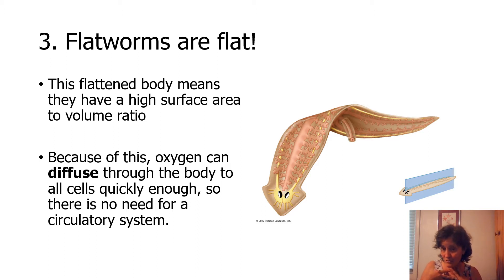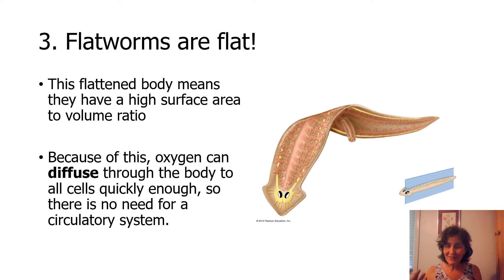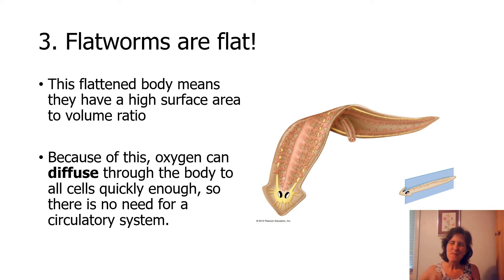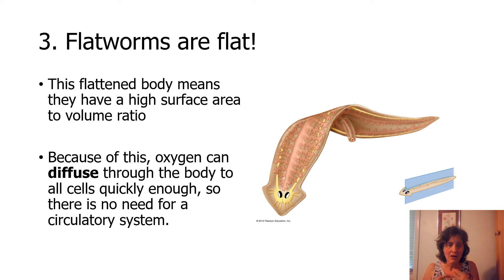That is something we could never do. We need to have our heart constantly beating and our respiratory system bringing in oxygen and putting it into the circulatory system to travel all around our body. But these organisms are very thin, so oxygen will just travel by diffusion — where molecules move from a high concentration to a low concentration — throughout their bodies.